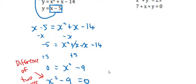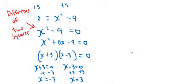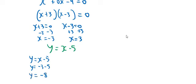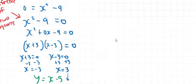Either x plus 3 equals 0 giving x equals minus 3, or x minus 3 equals 0 giving x equals 3. Now substituting back into the linear equation y equals x minus 5: when x equals minus 3, y equals minus 3 minus 5, so y equals minus 8. When x equals 3, y equals 3 minus 5, so y equals minus 2. So when x is minus 3, y is minus 8; when x is 3, y is minus 2.